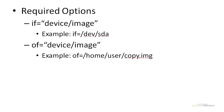All three of these commands require the same basic options, and there are multiple additional options available with each command. For the required options, you need the if and the of: if is for the input file and of is for the output file. You can have devices listed for both of those. For example, if equals /dev/sda, which is hard drive A associated with whatever operating system you're working with. You can also specify a partition by adding a number after it.